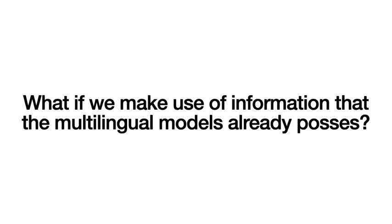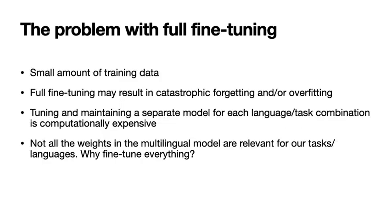Since the subtask was unconstrained, meaning that any additional resources were allowed, the first question we had was how can we make use of the information stored in multilingual pre-trained models, such as XLM-RoBERTa, which itself was trained on about a hundred different languages. Usually the most straightforward approach is full fine-tuning of the entire model. However, in this particular case, full fine-tuning has some undesirable properties. First of all, fine-tuning on small amounts of data, like we have in this subtask, is likely to result in catastrophic forgetting or overfitting.